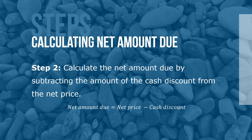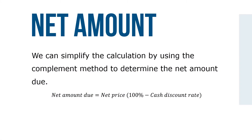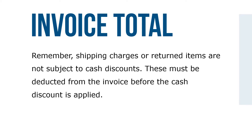Step 2: Calculate the amount due by subtracting the amount of the cash discount from the net price. Note: as with trade discounts, buyers are frequently more interested in the net amount due than the amount of the discount. When that's the case, we can simplify the calculation using the complement method: net amount due = net price × (100% minus the cash discount rate). Remember, shipping charges or returned items are not subject to cash discounts — these must be deducted from the invoice before the cash discount is applied. After the discount is taken, shipping charges, if any, are added back to get the invoice total.